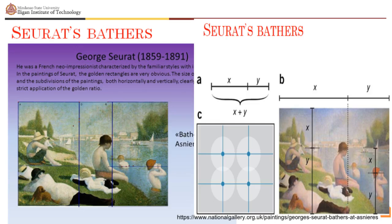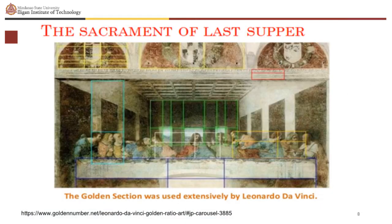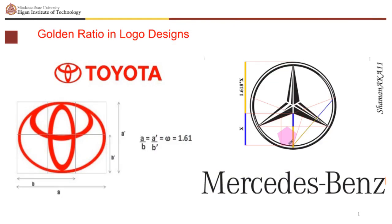Georges Seurat was a French painter whose works clearly show the strict application of the golden ratio. The golden section was used extensively by Leonardo da Vinci. Notice how all the key dimensions of the room, the table, and ornamental shields in da Vinci's The Last Supper were based on the golden ratio. In modern times, the golden ratio is also applied in logo and designs.